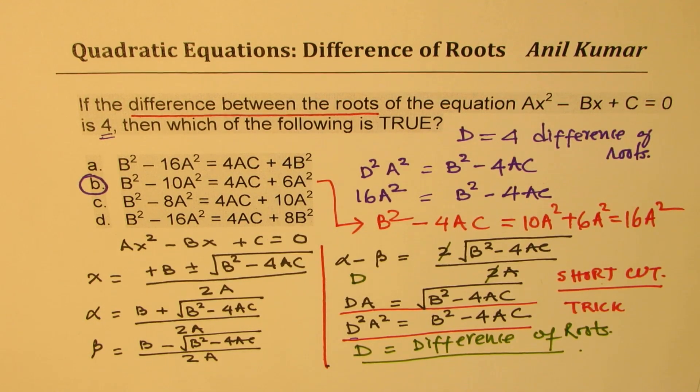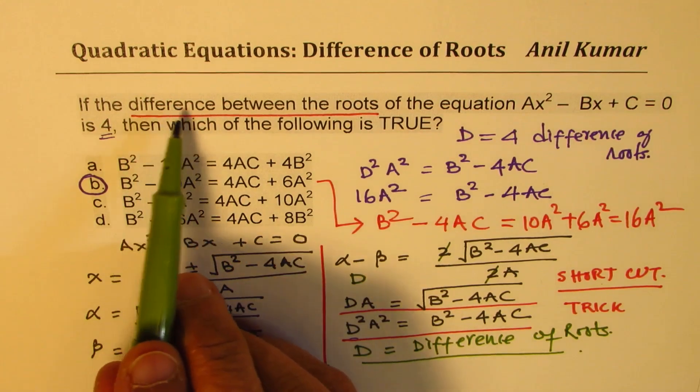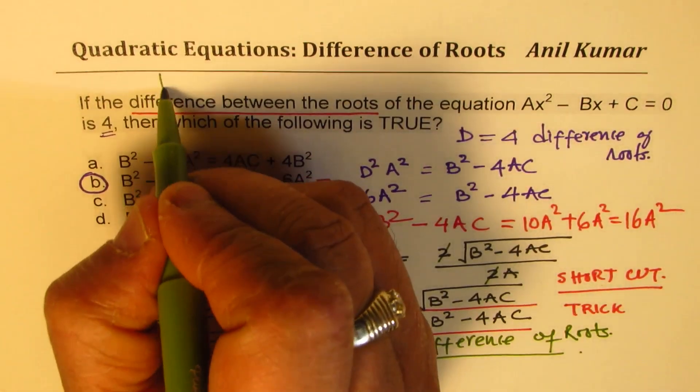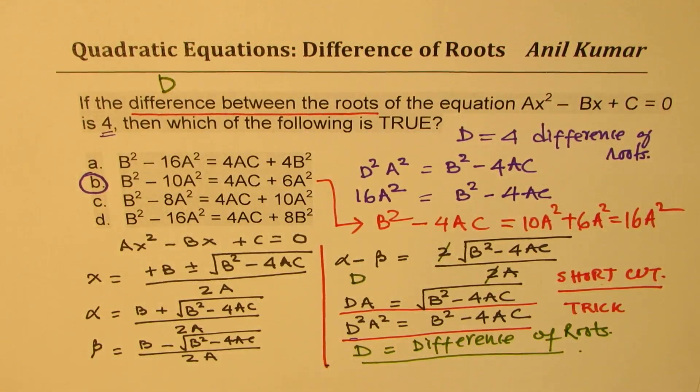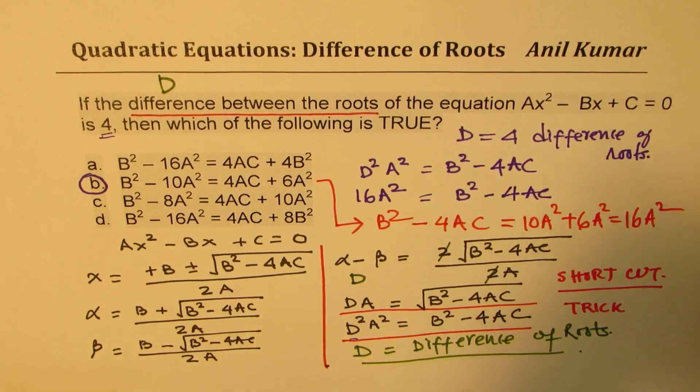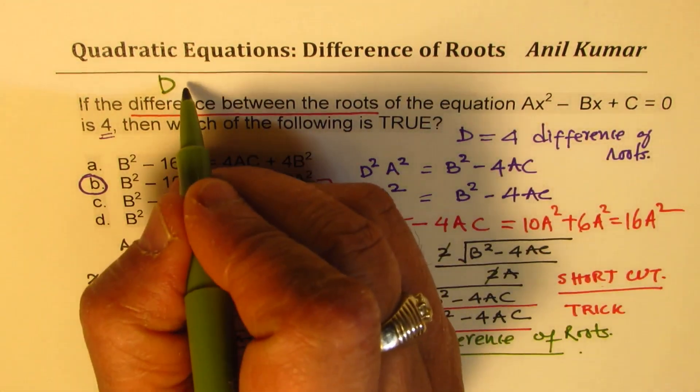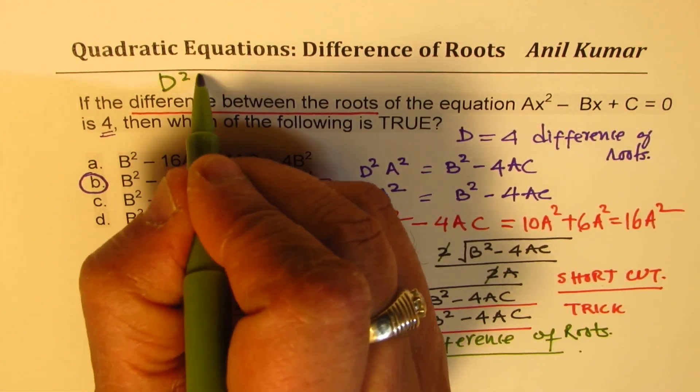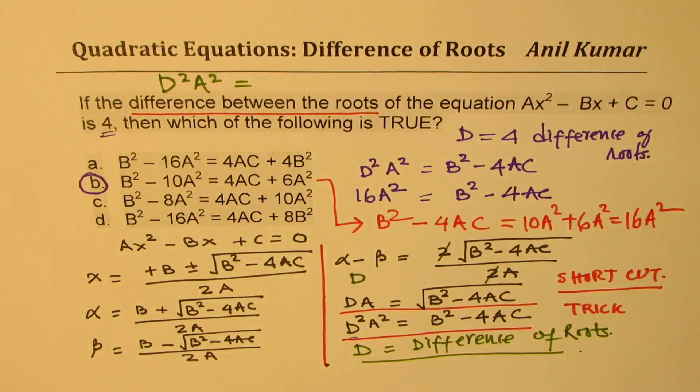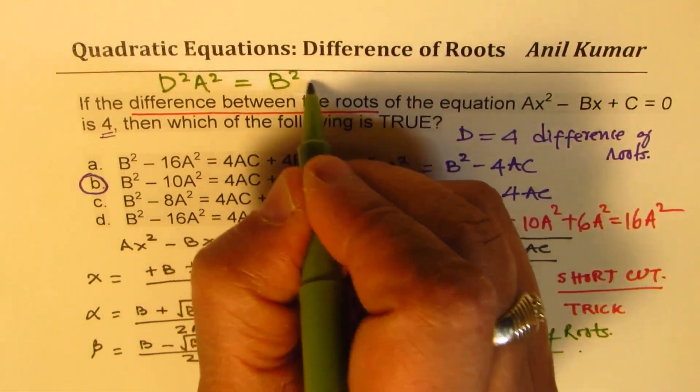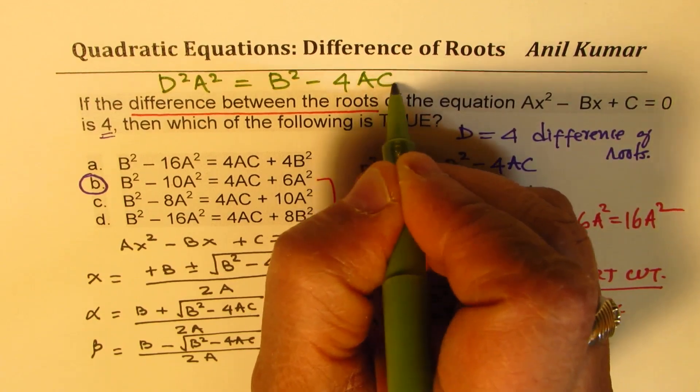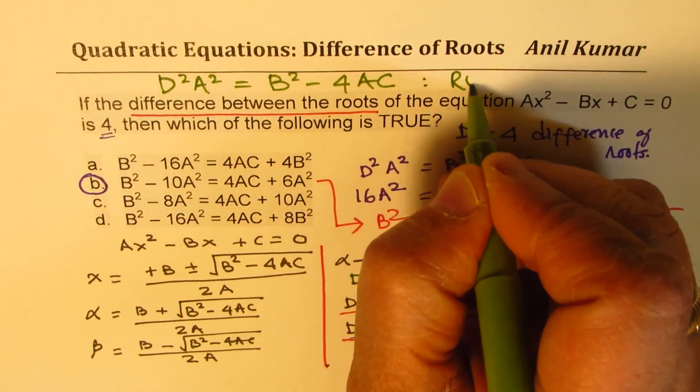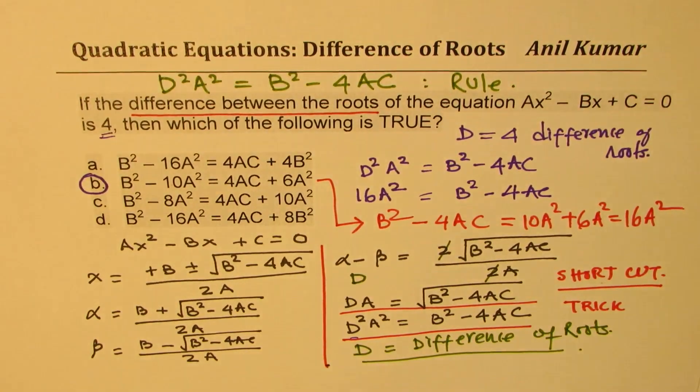Coming back to the multiple choice question, the trick here is: whenever a difference is given, say difference d, for any equation, you should know that d²a² = b² - 4ac. That is a rule for you to remember.